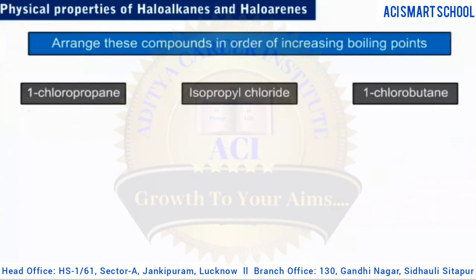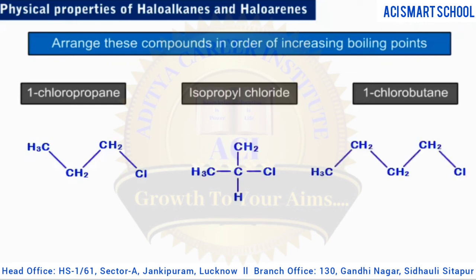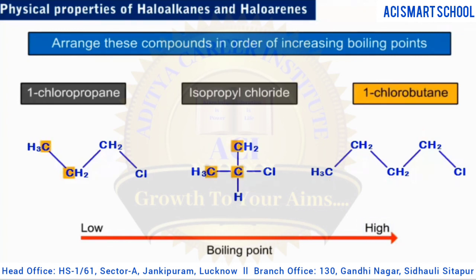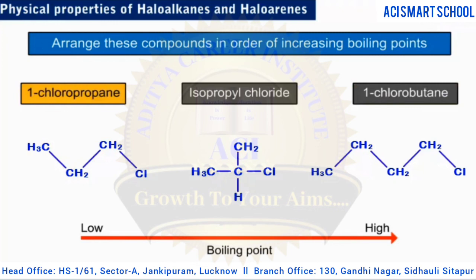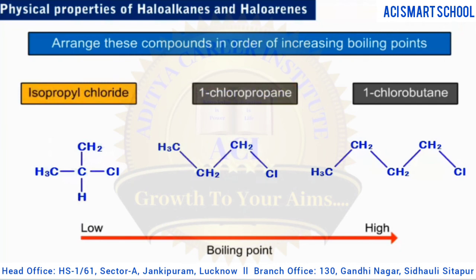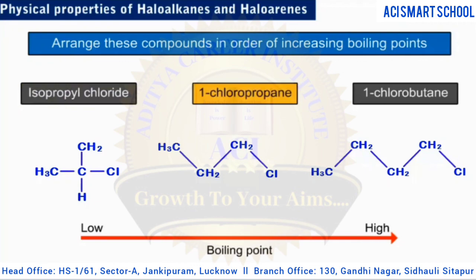Here is a problem: arrange these compounds in increasing order of their boiling points. All three structures contain one chlorine atom. Since boiling point increases with the number of carbon atoms, 1-chlorobutane with its four carbon atoms should have the highest boiling point. The other two compounds each have three carbon atoms, but 1-chloropropane is a straight chain while isopropyl chloride is branched. Branched molecules have lower boiling points, so isopropyl chloride should have the lowest boiling point, with 1-chloropropane in the middle.